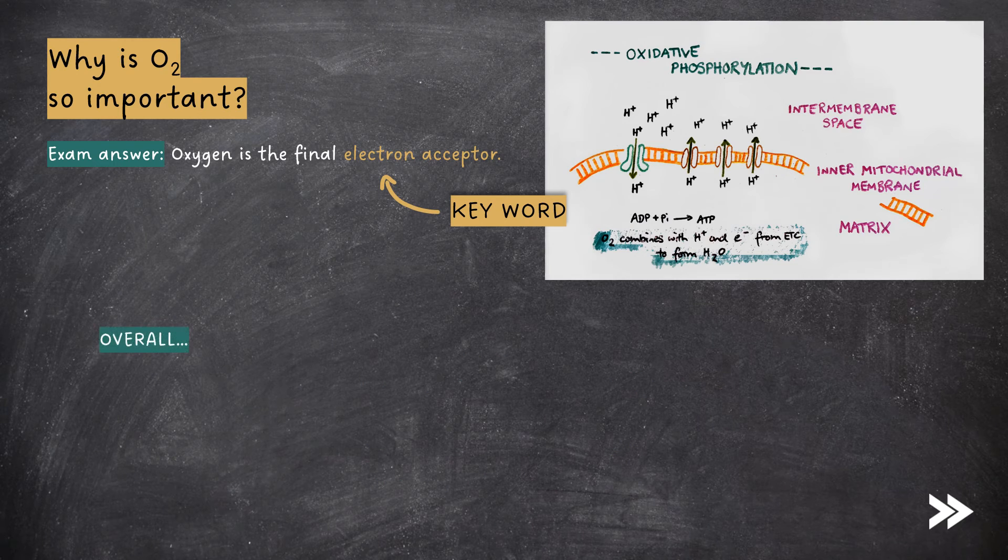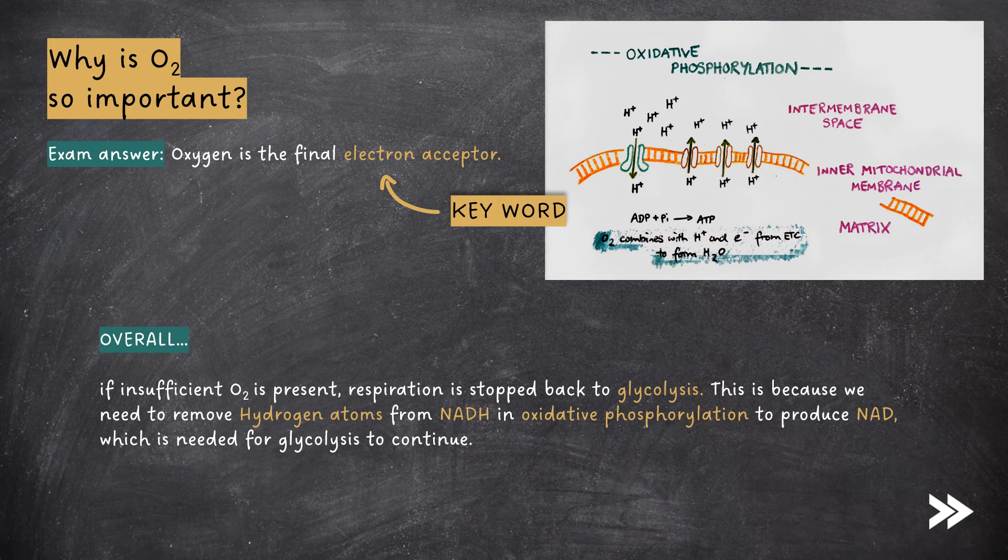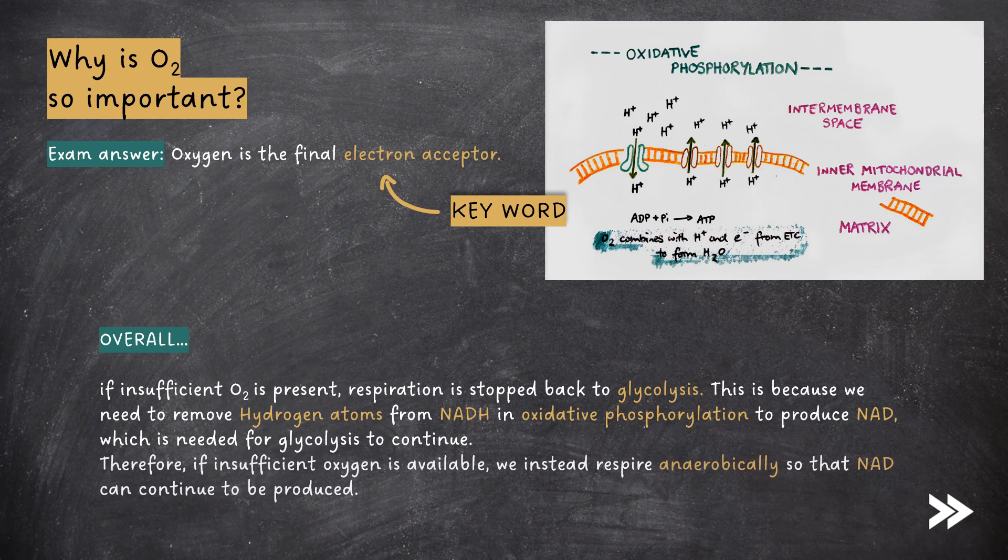Overall, if insufficient oxygen is present, respiration is stopped all the way back to glycolysis. This is because we need to remove hydrogen atoms from NADH in oxidative phosphorylation to produce NAD, which is needed for glycolysis to continue. Therefore, if insufficient oxygen is available, we instead respire anaerobically so that NAD can continue to be produced.